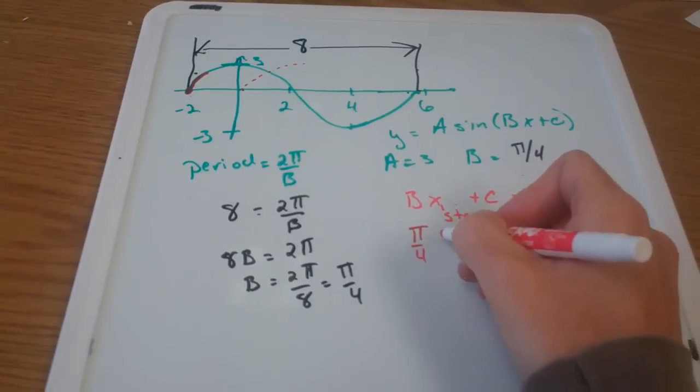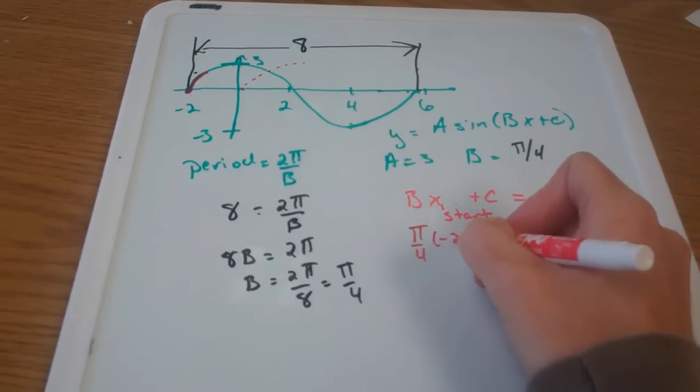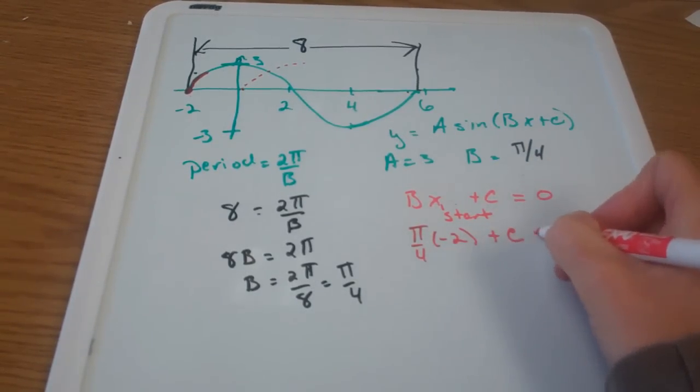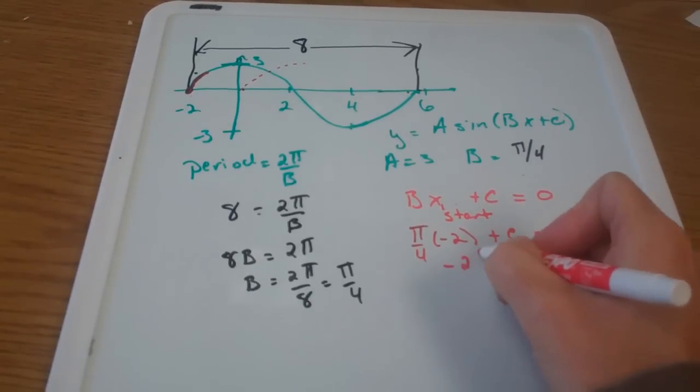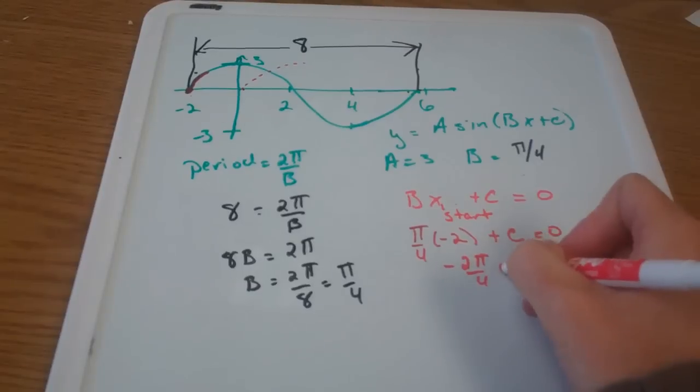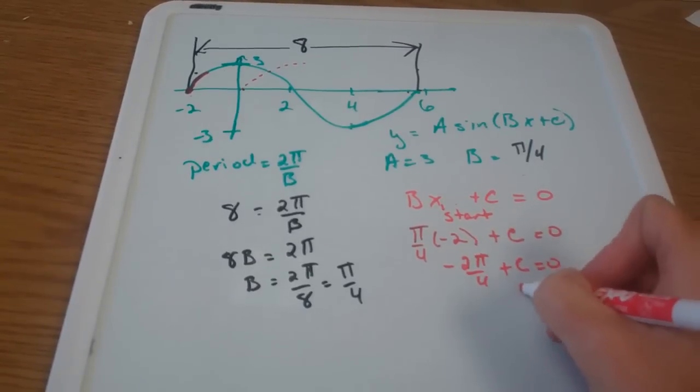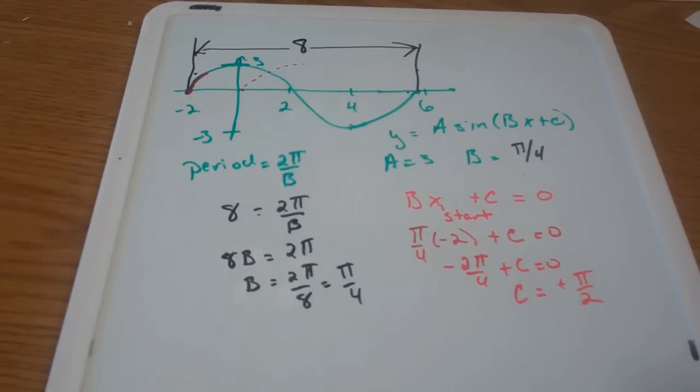b, recall, is π over four. x start is negative two plus c equals zero. That's negative 2π over four plus c equals zero. Solve for c. c is positive π over two.